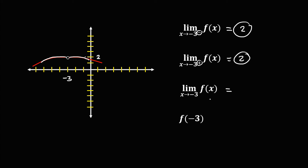Then for this limit as x approaches negative 3, since the limit from negative 3 to the left equals the limit from negative 3 to the right, therefore this limit is also equal to positive 2.